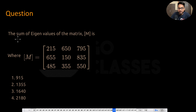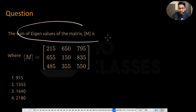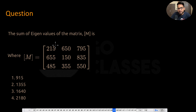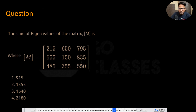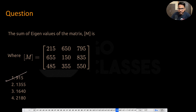Now let's see another question: the sum of eigenvalues of matrix M is being asked. The sum of eigenvalues means the trace — sum all the diagonal elements — which gives 550 plus 150 equals 700, making the total 915. So option A is the correct answer. That's a very easy question.